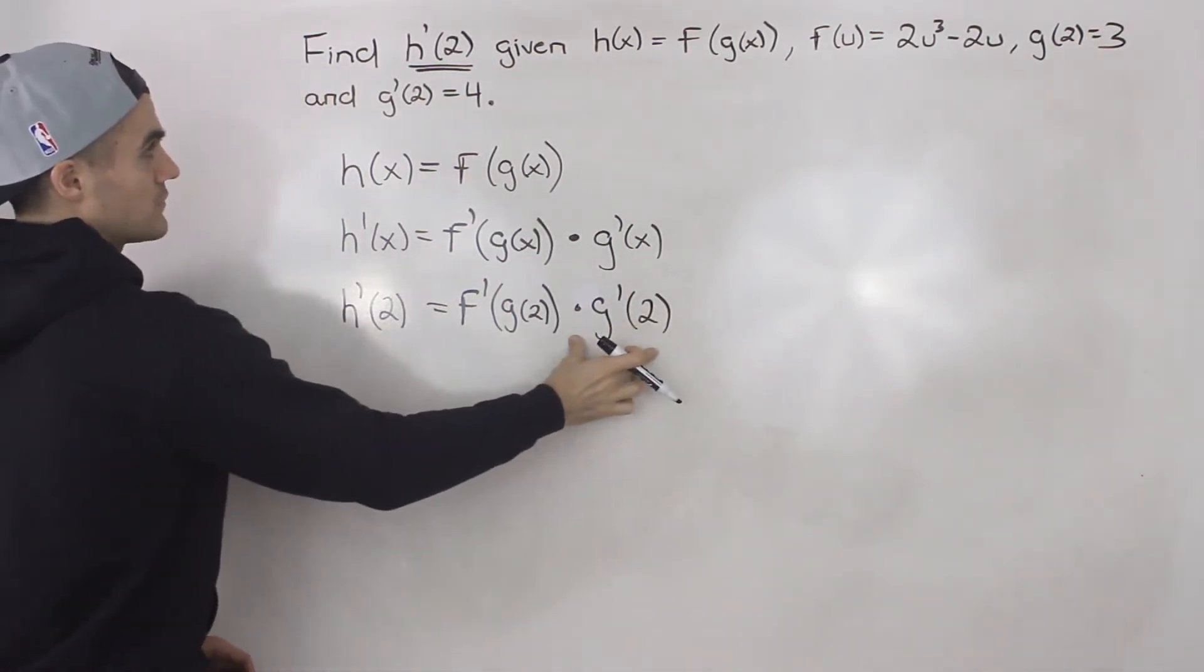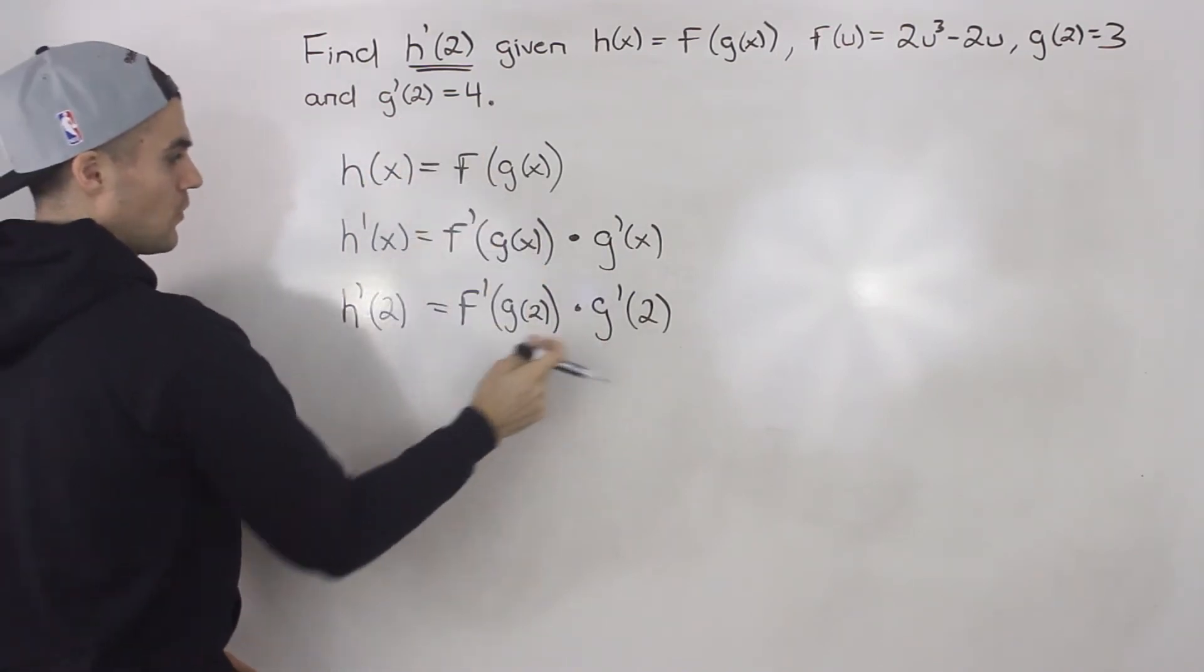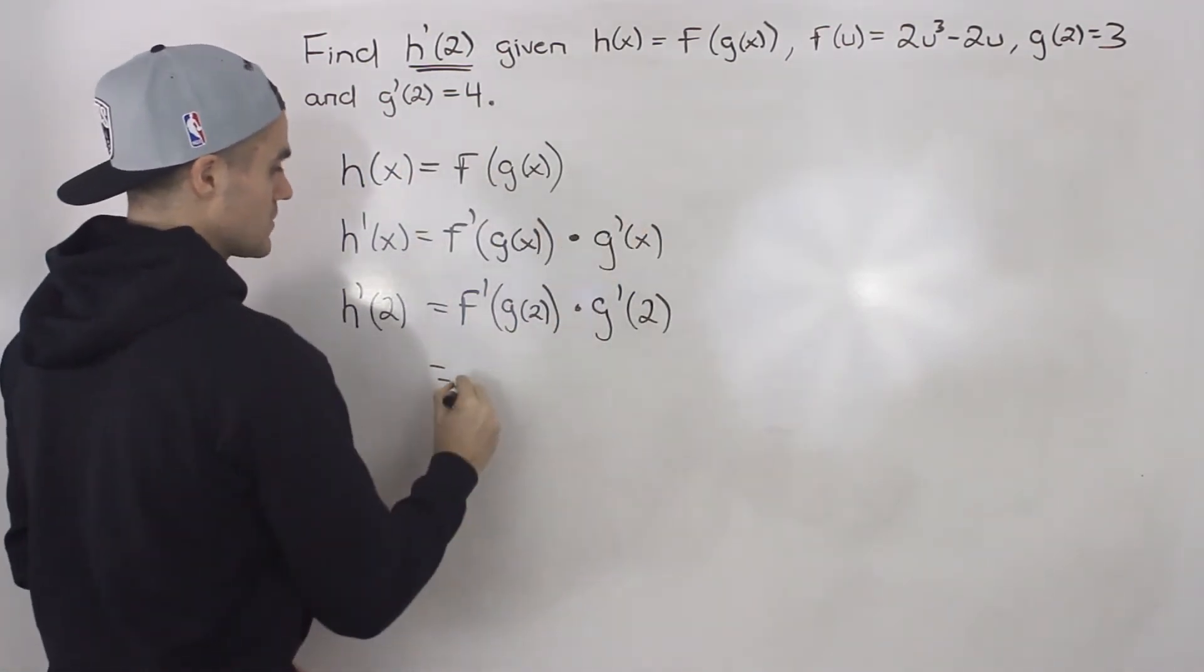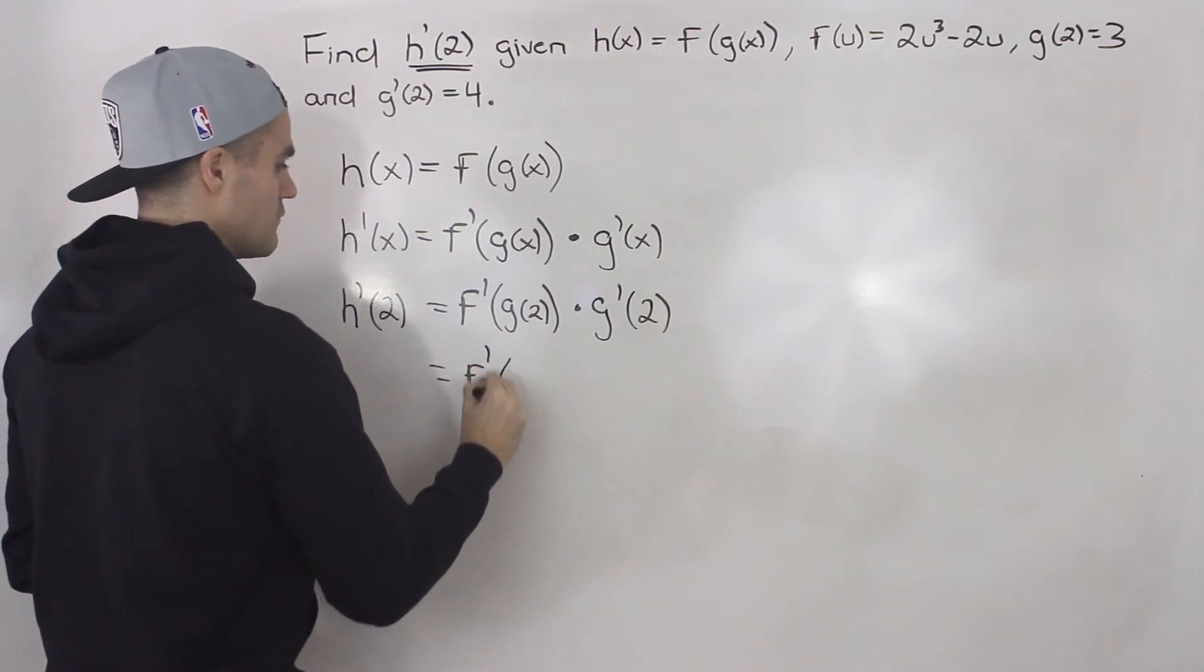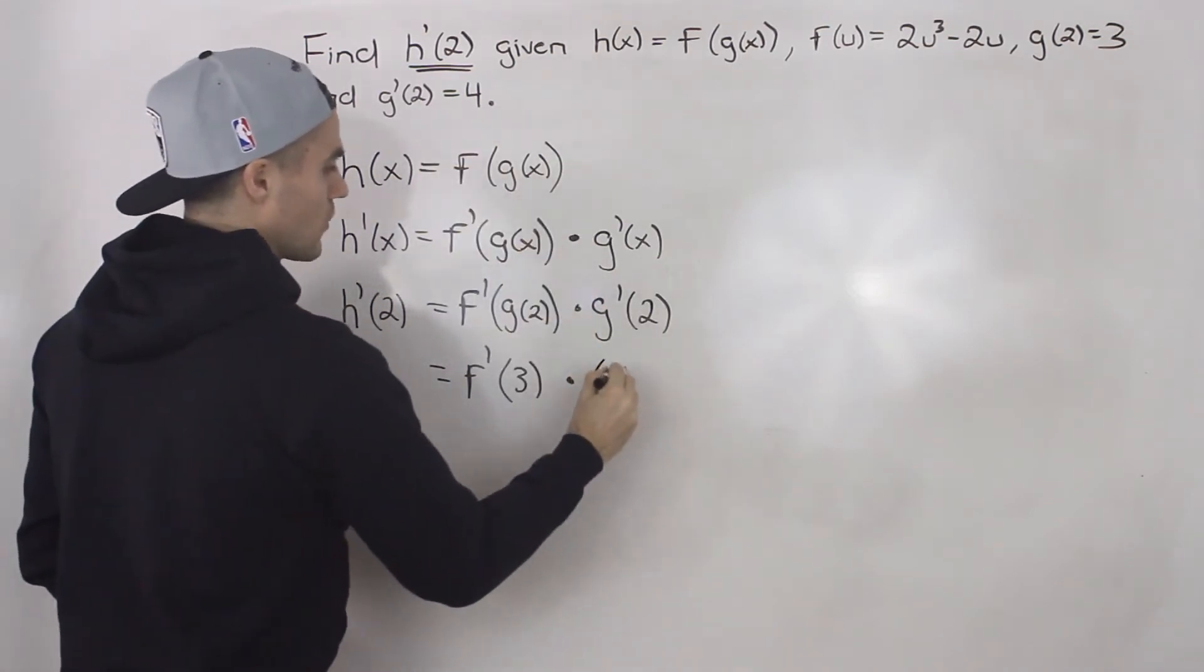Notice that g'(2) and g(2) are given. We know g'(2) is 4 and g(2) is 3, so we can rewrite this as f'(3) times g'(2), which is just 4.